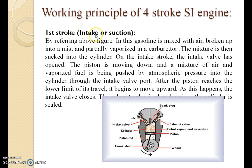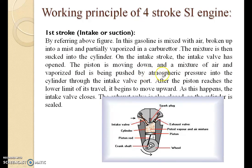Working principle of the 4-stroke SI engine. First stroke is the intake or suction stroke. Referring to the above figure, gasoline is mixed with air, broken up into mist and partially vaporized in the carburetor. The mixture is then sucked into the cylinder. On the intake stroke, the intake valve has opened and the piston is moving down. The mixture of air and vaporized fuel is being pushed by atmospheric pressure into the cylinder through the intake valve. After the piston reaches the lower limit of its travel, it begins to move upward, and the intake valve closes.